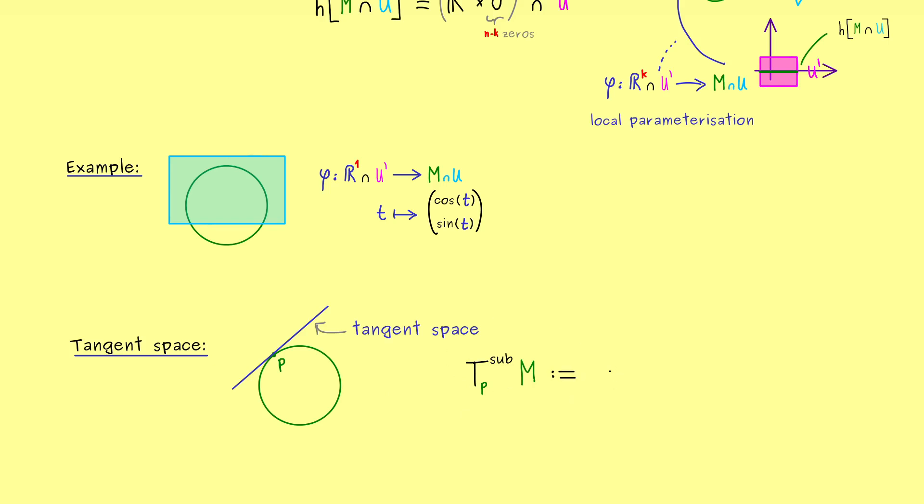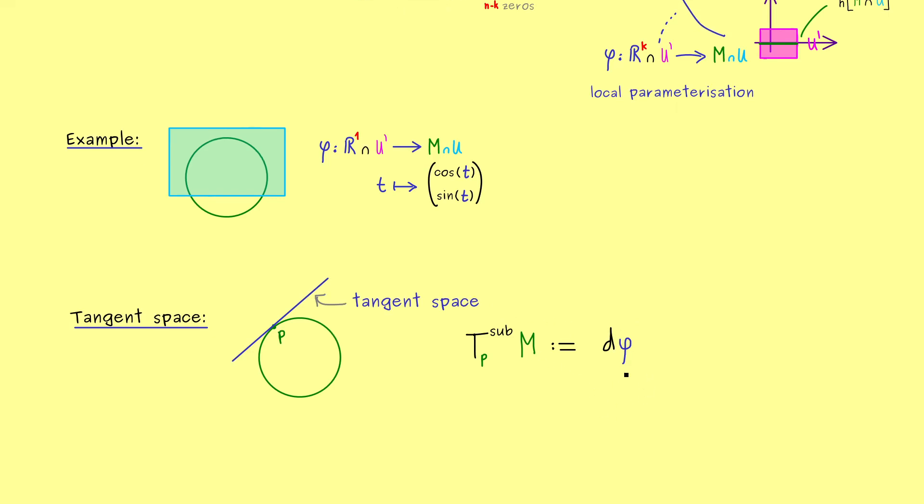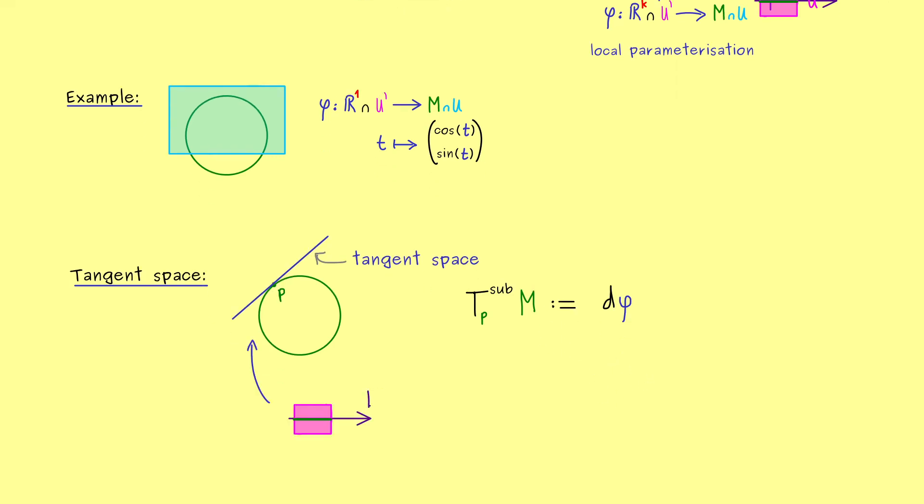Now the definition here is simply that we look at the range of the differential of phi. Of course, by the definition of the differential we always need a point. Moreover, this should be the point in the domain corresponding to our p. Let's simply call it p tilde - the preimage of p.